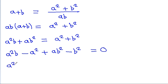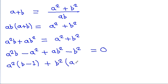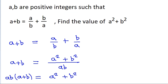And it is a squared times (b minus 1) plus b squared times (a minus 1) is equal to 0. We have given that a, b are positive integers.